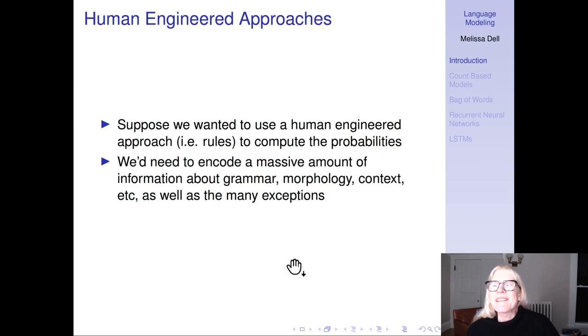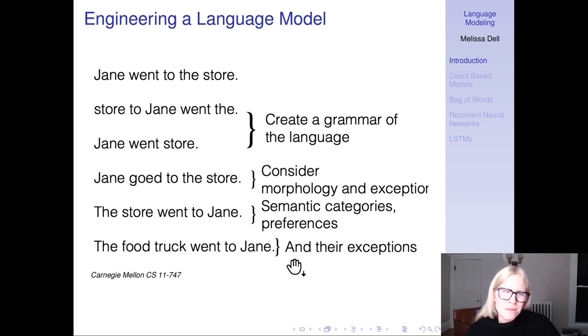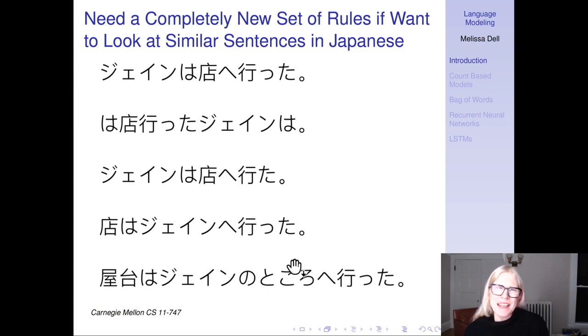As in all things we'll see in this course, initially people tried computational processing of language using human-engineered approaches, in other words using rules. If you want human-engineered approaches, you have to encode a massive amount of information about grammar, morphology, context, as well as the many exceptions and exceptions to the exceptions. Suppose we do all of that for English and we want to apply it to Japanese - we're going to have to start over.